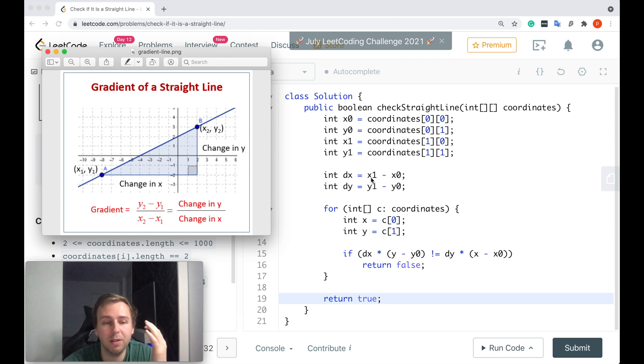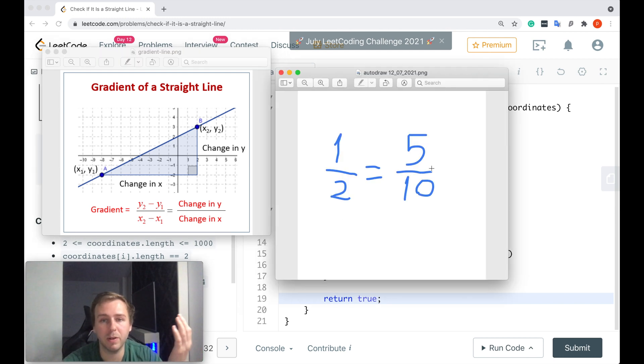The idea is that we calculate the initial change in x and change in y for the first two points from the array, and after that we can just multiply the change in x with the current change in y, and also multiply the change in y for the first two points with the current change in x. 1 divided by 2 is the same as 5 divided by 10. So if the gradients are still the same, then you would multiply 5 with 2, you get 10, and you multiply 1 with 10 and you get 10. These two things are still equal - the division is not actually needed.